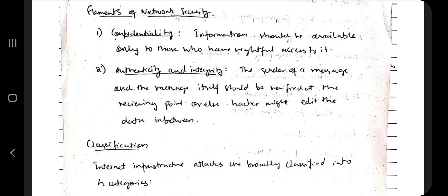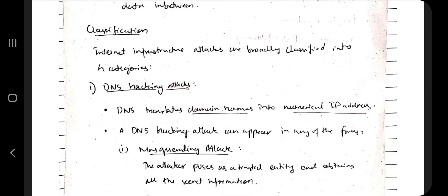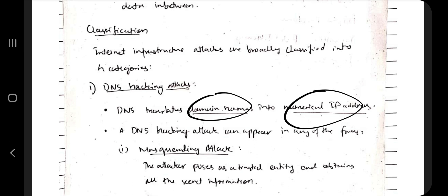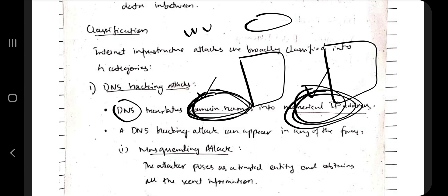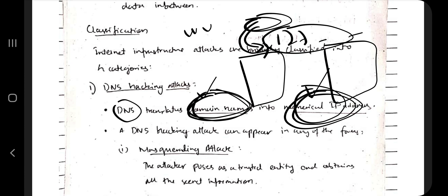There are mainly four types of network attacks. The first one is the DNS hacking attack. DNS translates domain names to numerical IP addresses. For example, www.google.com is translated to an IP address like 127.something by DNS. DNS hacking attack means while that translation is happening, some attack occurs.